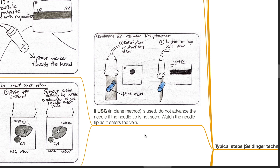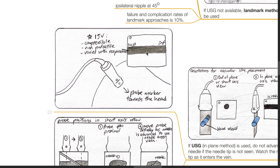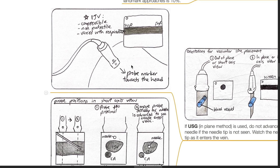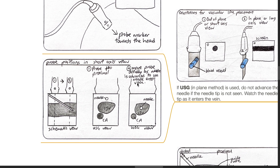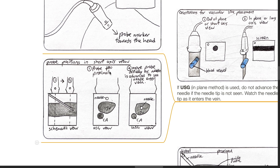If the ultrasound method is used, do not advance the needle if the needle tip is not seen — watch the needle tip as it enters the vein. There are two orientations for vascular line placement: out of plane and in plane. The IJV is differentiated from the carotid artery as it is compressible, non-pulsatile, and varies with respiration. In the short-axis probe position, as the needle is advanced, move the probe distally so that the needle can be seen entering the vein.